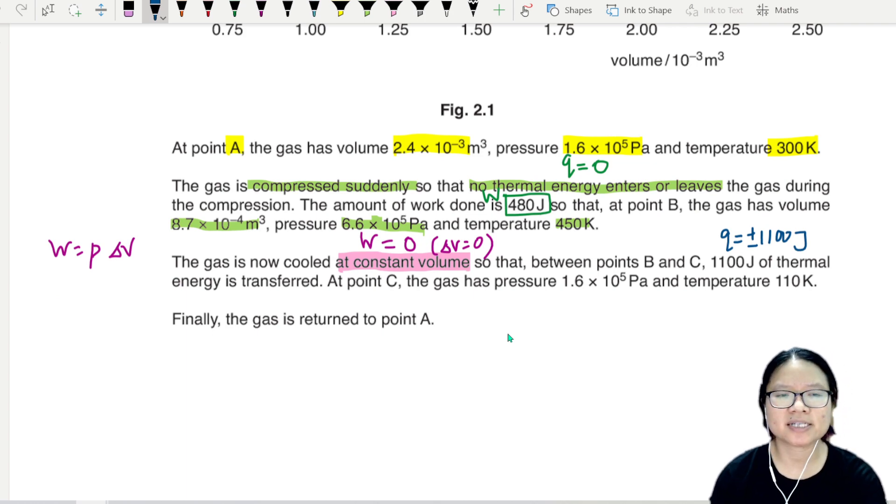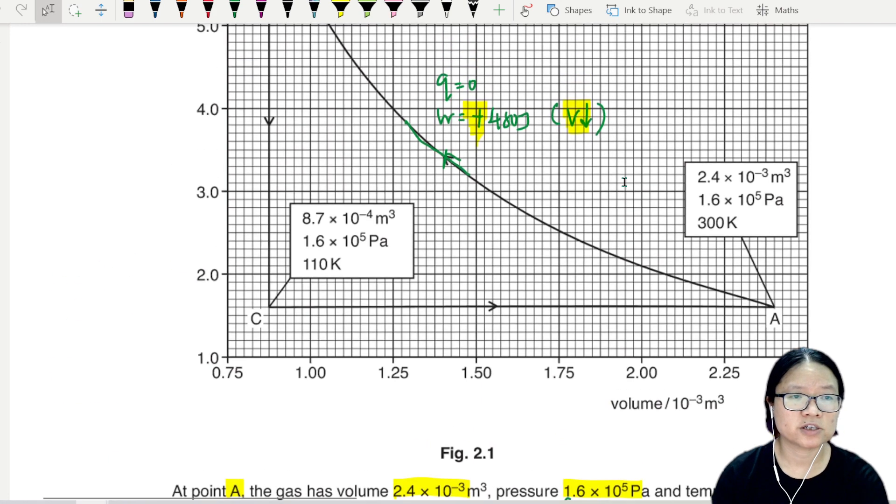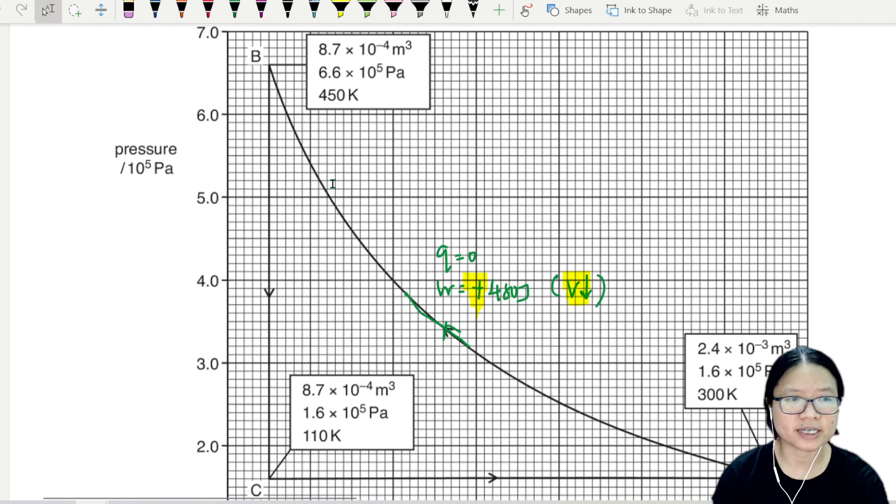At point C, the gas has a pressure of this much and a temperature of that much. So this is my point C now. With the same volume, finally the gas returns to point A.